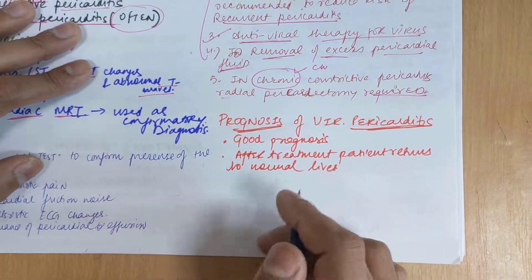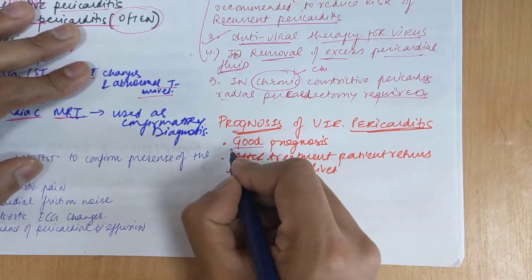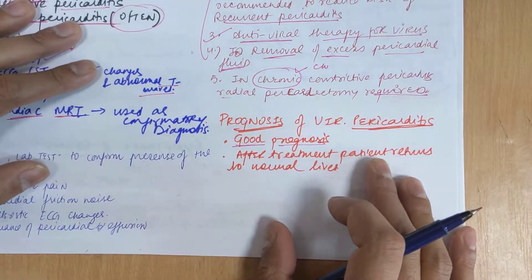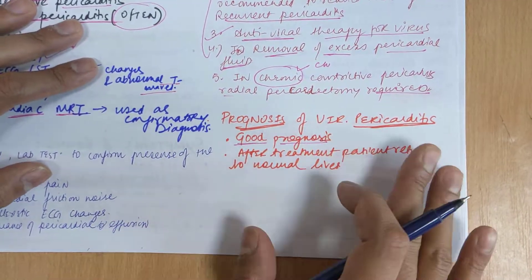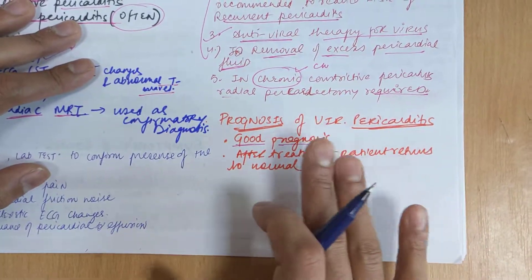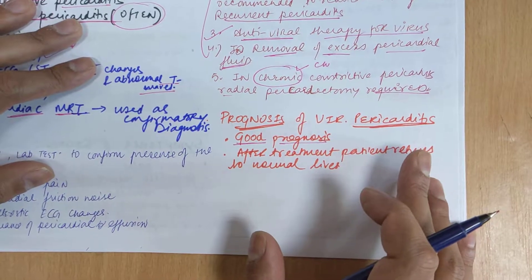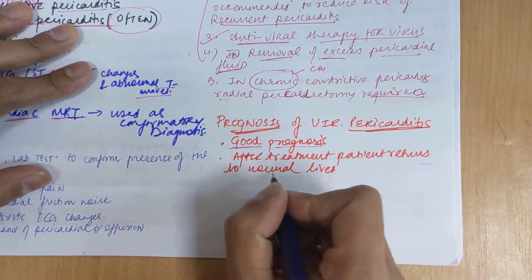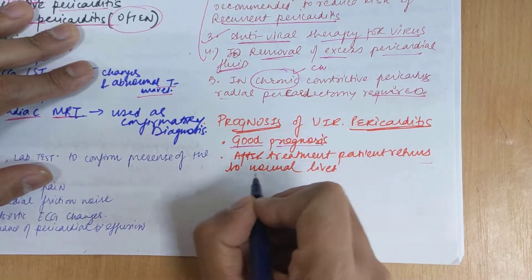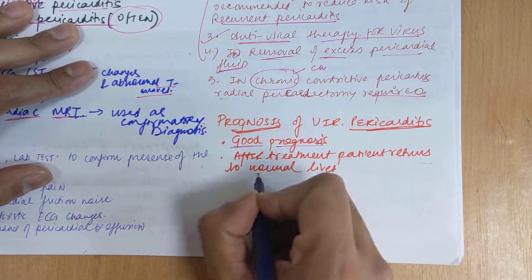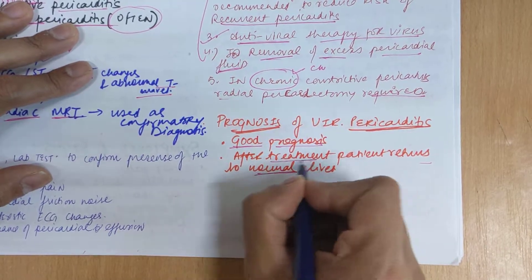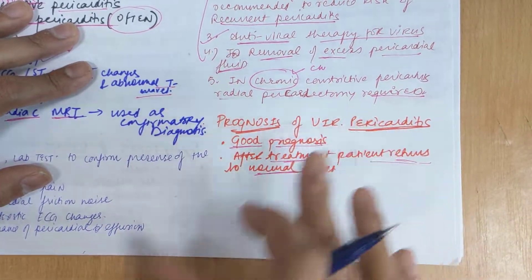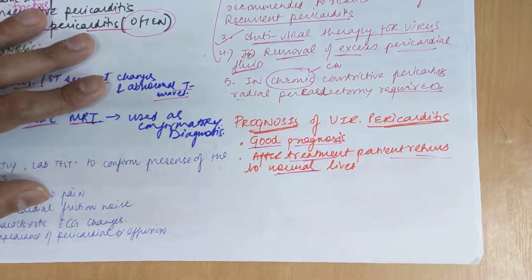The prognosis of viral pericarditis is good, because acute pericarditis is the most common form and most patients usually recover from viral pericarditis. After treatment, the patient returns to their normal life. This is the main prognosis for viral pericarditis.